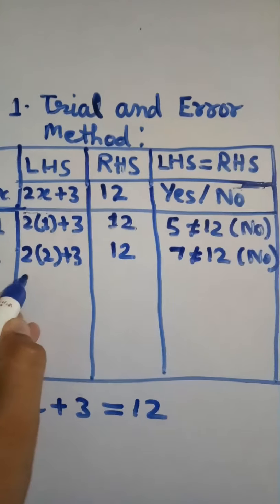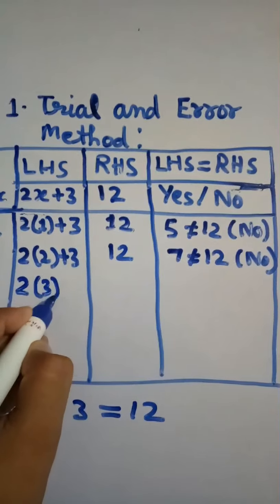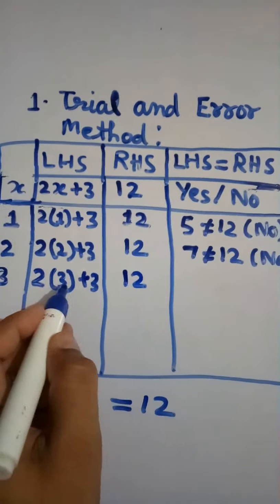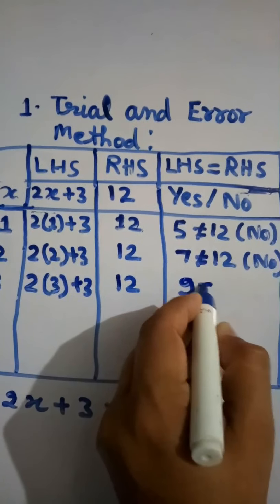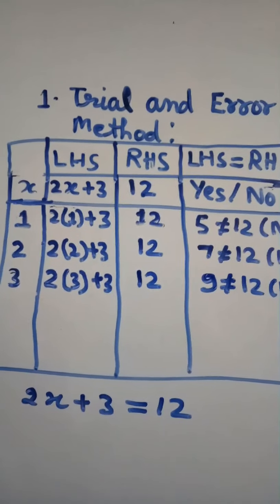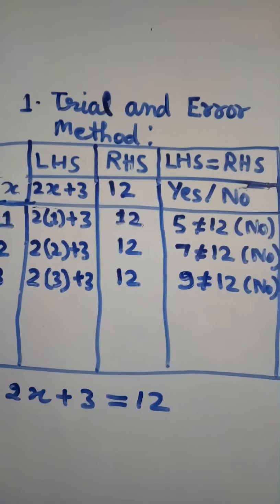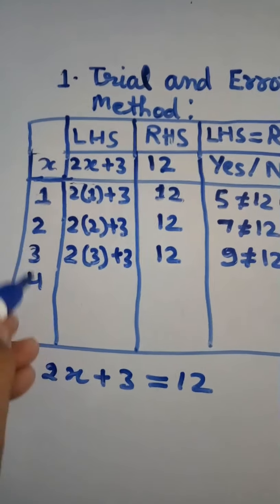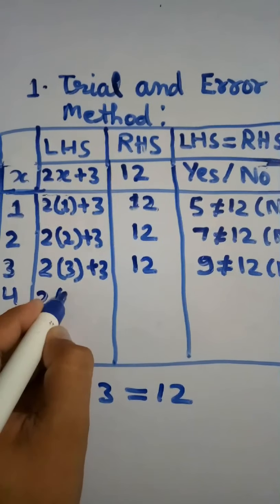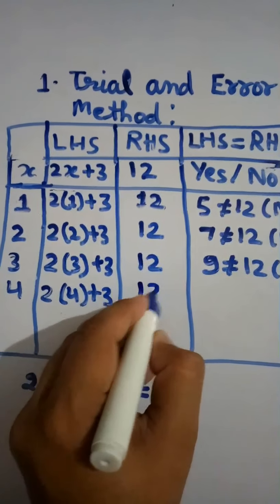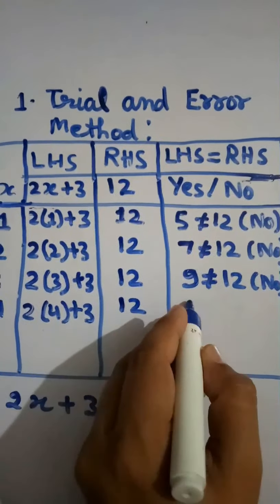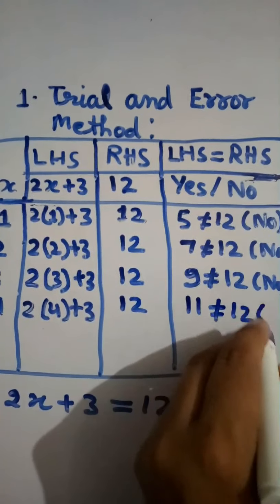Now put x equal to 3 in the left hand side: 2 times 3 is 6, plus 3 is 9. 9 is not equal to 12, so no. Similarly, trying other values the answer remains no. Put x equal to 4: 2 times 4 is 8, plus 3 is 11. 11 is not equal to 12, so again the answer is no. This is the trial and error method.